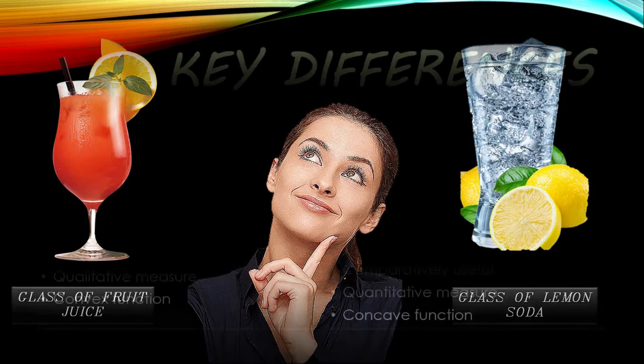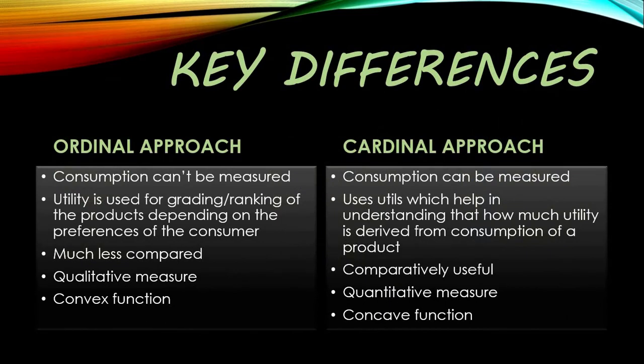The key differences: in the ordinal approach, utility cannot be measured and is used for ranking. In the cardinal approach, utility can be measured — it is the oldest theory and explains how much utility is derived from consuming a product. The ordinal approach is more realistic, uses qualitative measures, and also involves a concave function.